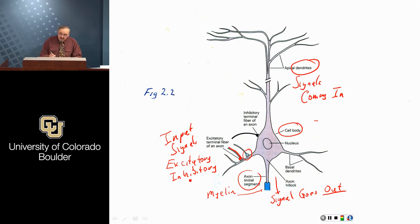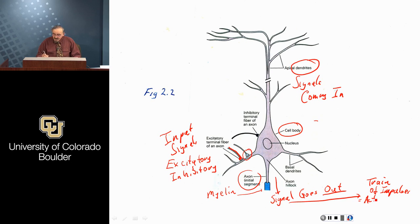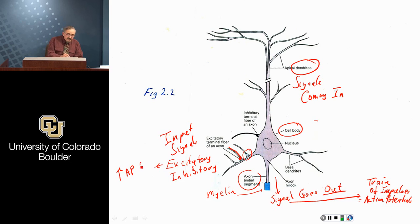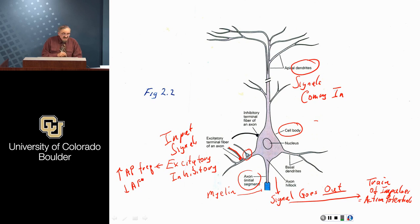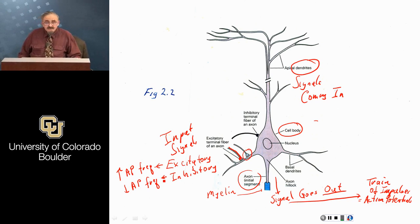If you get a lot of excitatory inputs, the output signal is maxed out. If you have only inhibitory signals, the signal comes out as basically zero, and in between you get a continuum. The signal going in and out is a train of impulses known more formally as action potentials. It is the frequency of the APs that is increased when the cell is excited, and the frequency that is suppressed or lowered when inhibition takes over. You cannot have a negative frequency, so the most inhibition can do is silence the cell.